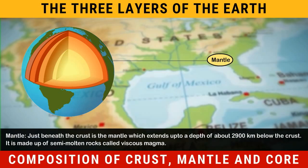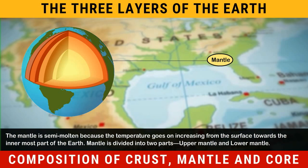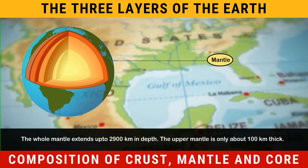Just beneath the crust is the mantle, which extends up to a depth of about 2,900 km below the crust. It is made up of semi-molten rocks called viscous magma. The mantle is semi-molten because the temperature goes on increasing from the surface towards the innermost part of the Earth. The mantle is divided into two parts: the upper mantle, which is only about 100 km thick, and the lower mantle, with the whole mantle extending up to 2,900 km in depth.